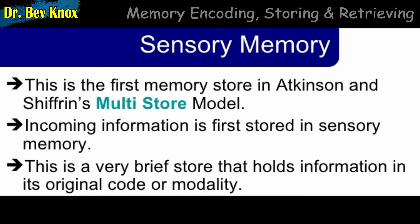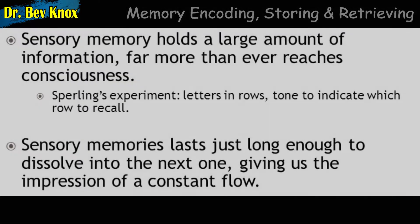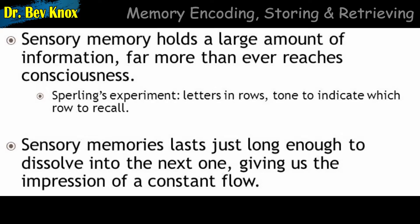Sensory memory can store information for only a very short time. If information is not passed into short-term memory, it is lost for good. Sensory memory operates as a kind of snapshot that stores information, which may be of a visual, auditory, or other sensory nature, for a brief moment in time. But it is as if each snapshot, immediately after being taken, is destroyed and replaced with a new one. Unless the information in the snapshot is transferred to some other type of memory, it is lost.